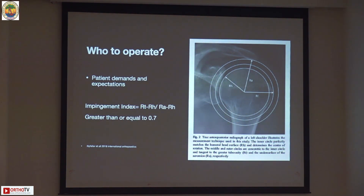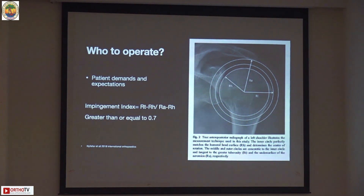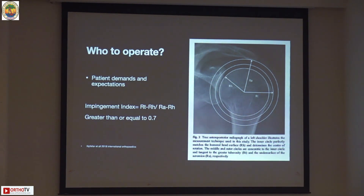Who do we operate? Patient demand and patient expectations come first, because many of these injuries happen in older individuals who are not able to do a lot of day-to-day activities they wanted to do — they have overhead abduction up to around 70-80 degrees and they're happy with that. So why operate those people? For younger patients with good bone stock, we need to find out whether they will do well with surgery.